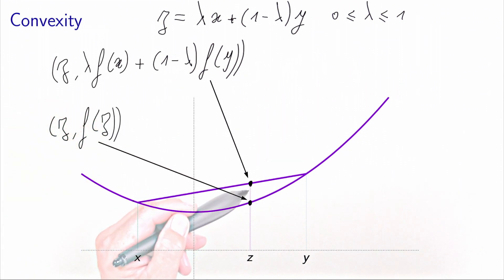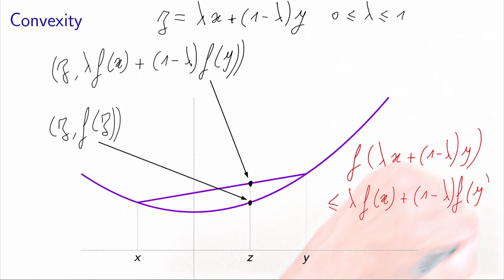So saying that this point must be above this point is the same as saying that f of z is less or equal to lambda f of x plus 1 minus lambda times f of y. And this should be true for any x and y and any value of lambda between 0 and 1. So this is the geometric interpretation of convexity.